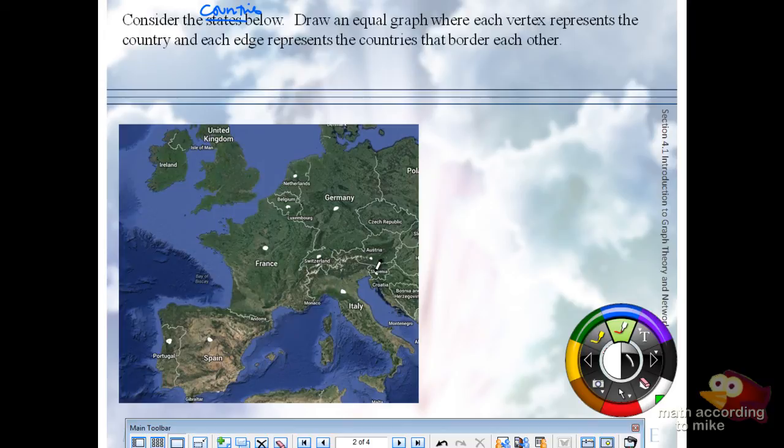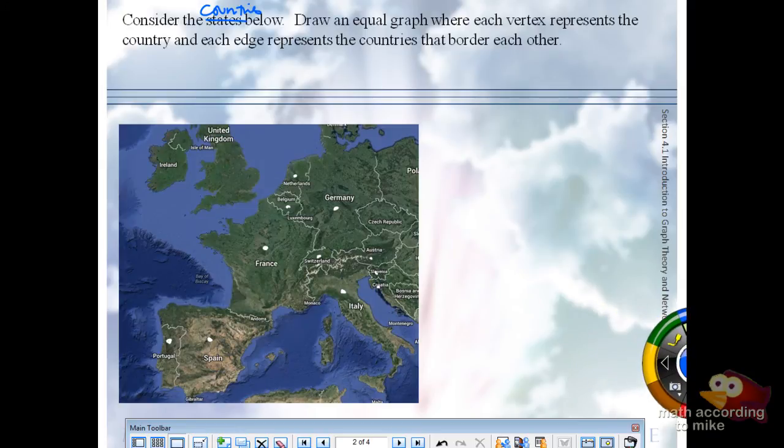So, for instance, we'll say P for Portugal. That's going to connect to S for Spain. That's going to connect to S for France. We'll do S for Spain because we have Switzerland coming up pretty soon. All right. Keep going. So, you create an edge if the countries border each other.